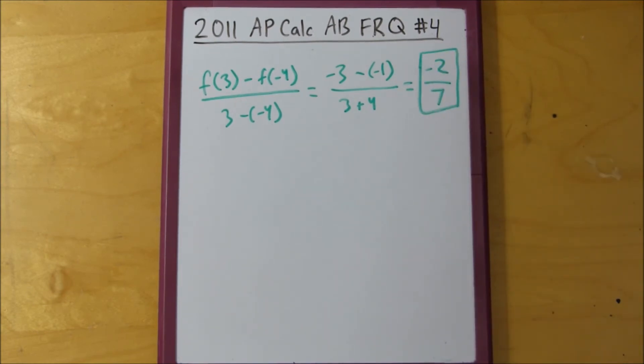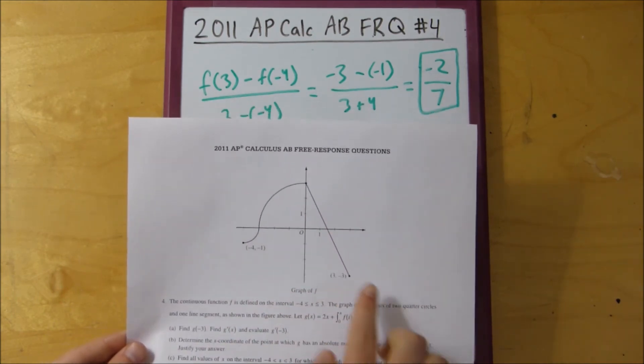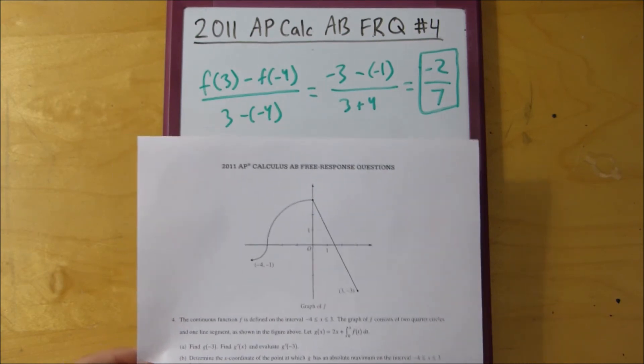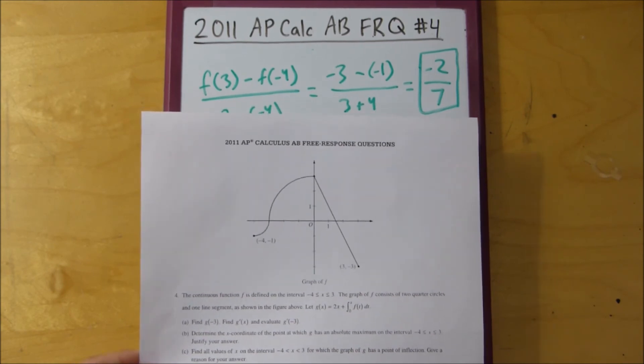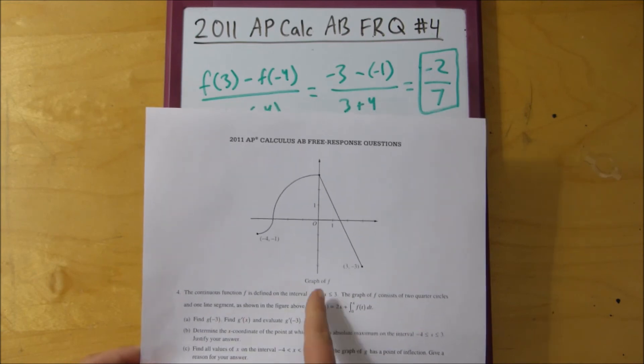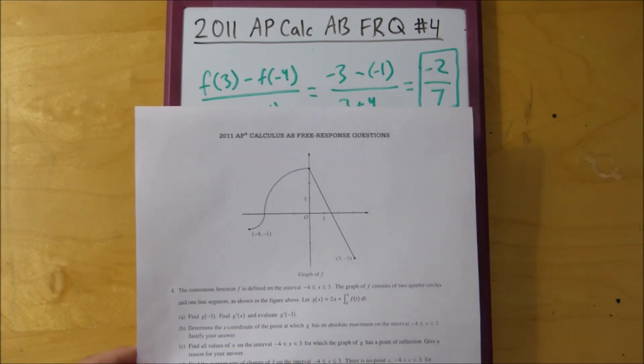But then it goes on to say that mean value theorem does not apply in this situation. So, let's first explore what the mean value theorem is. The mean value theorem necessitates that our graph is continuous on the entire interval. And, I mean, it is continuous. But, the second thing that it requires is that f is differentiable at all points between negative 4 and 3. Not including the endpoints. But, like we said before, it's not differentiable at negative 3, where there's a vertical tangent line, or at 0, where there's like a cusp.